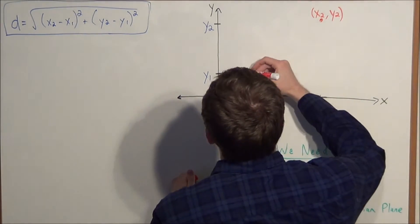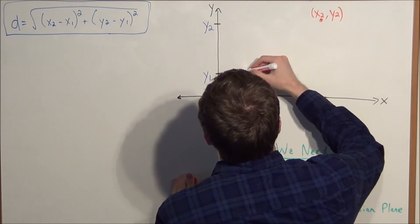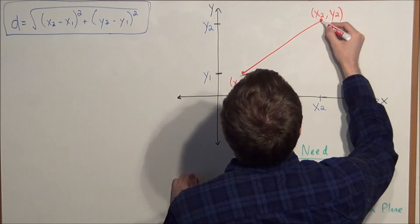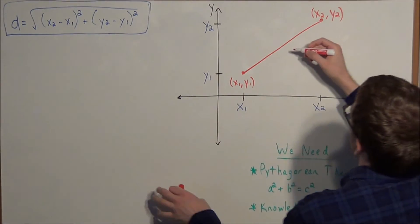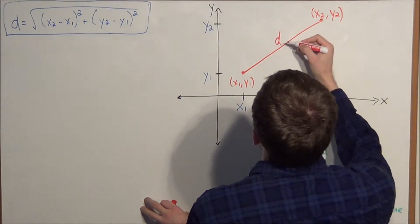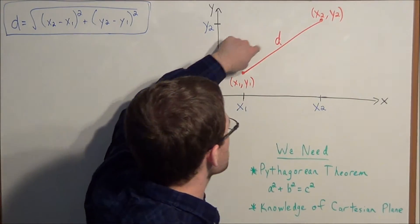So to get started, I want to connect these two points (x1, y1) and (x2, y2). And this straight line segment we can label d, where d represents the distance between these two points.